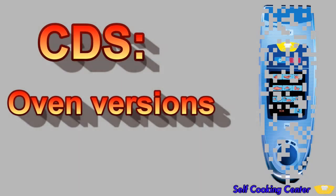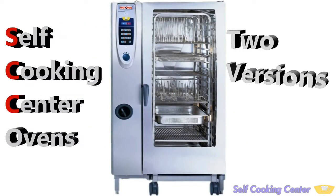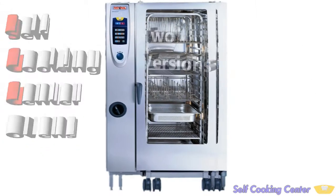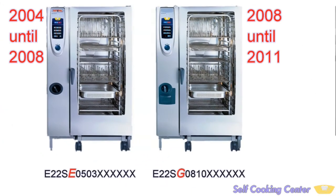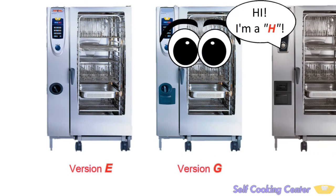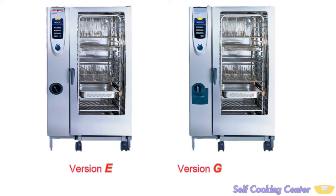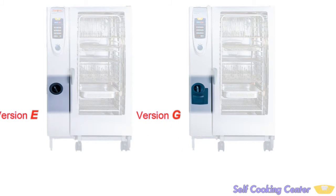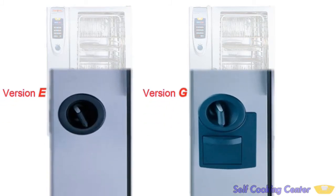First, oven versions. The SCC model series oven was manufactured in two versions. The original version E was made from 2004 to 2008, then version G was made from 2008 to 2011. Those letters are the fifth digit of their serial numbers. There's also a version H — that's the white efficiency with five senses — but it doesn't belong to this video, and they never made a version F. Without looking at the serial numbers, you can quickly distinguish between version E and version G: the version G has a drawer by the hand shower and the version E does not.